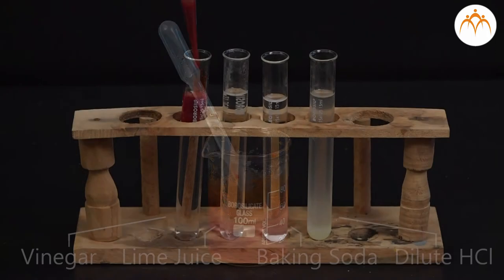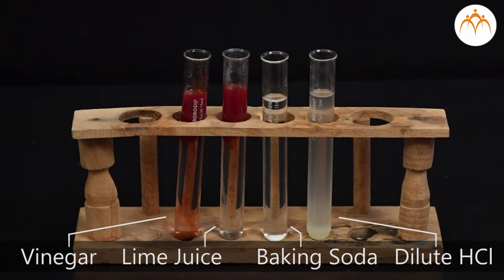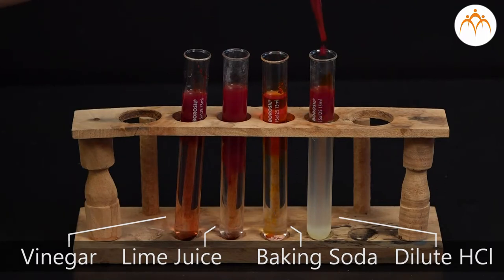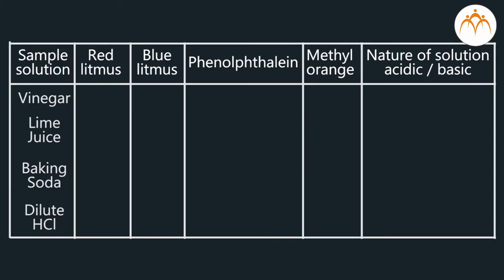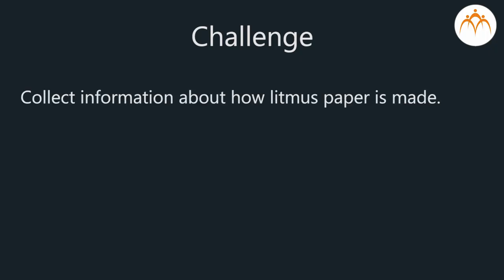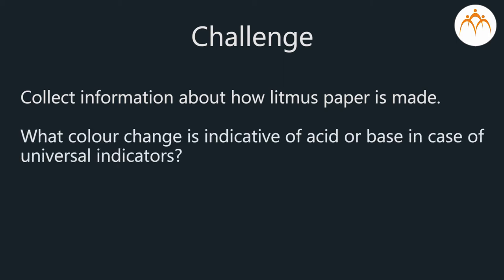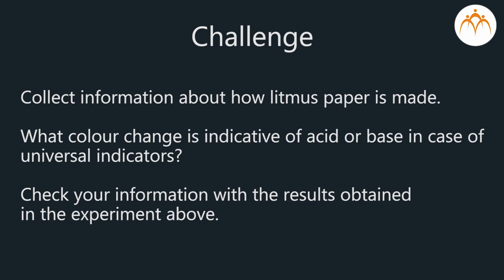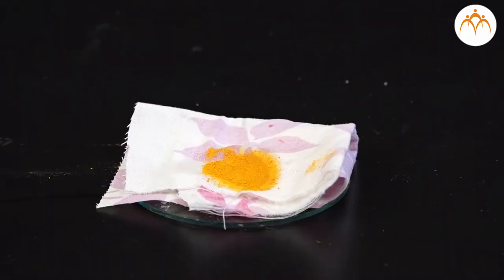Observe the color changes using red litmus, blue litmus, phenolphthalein, and methyl orange for each sample solution and record the nature of the solution as acidic or basic. Challenge: collect information about how litmus paper is made and what color change is indicative of acid or base in case of universal indicators. Check your information with the results obtained in the experiment.